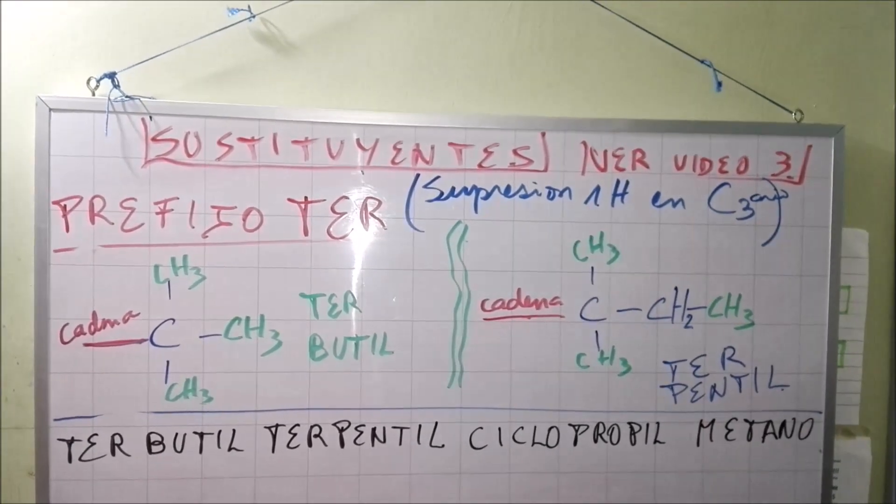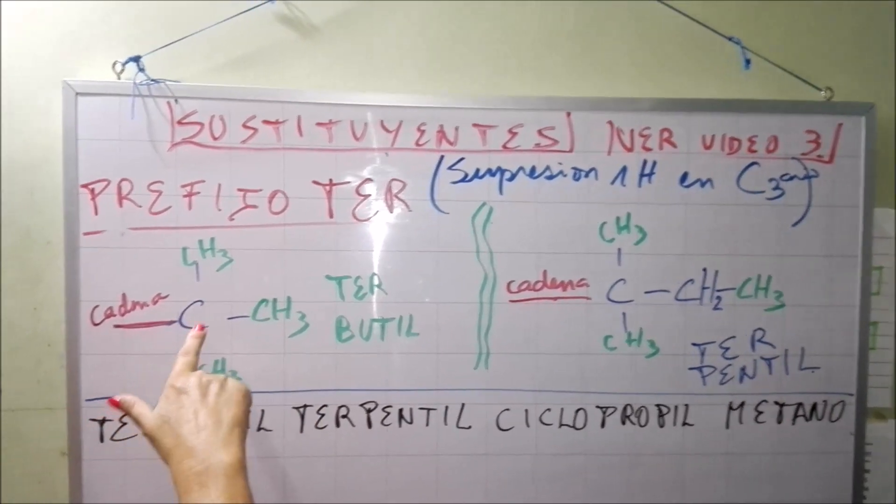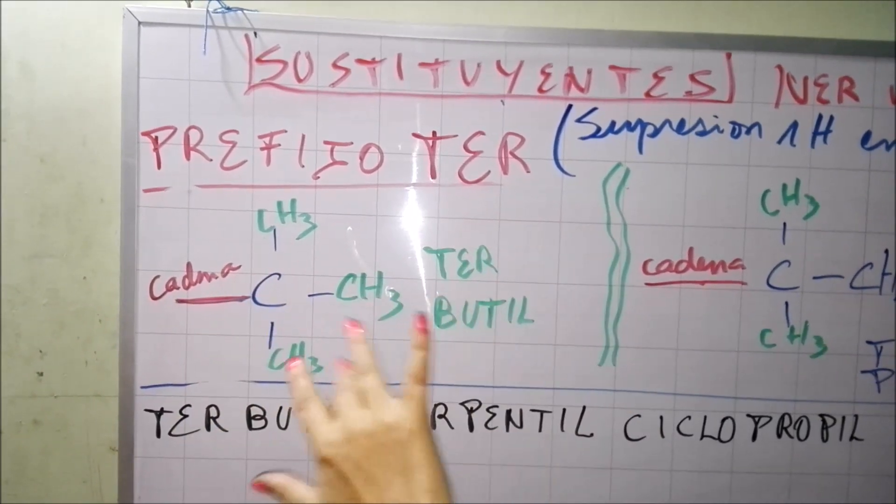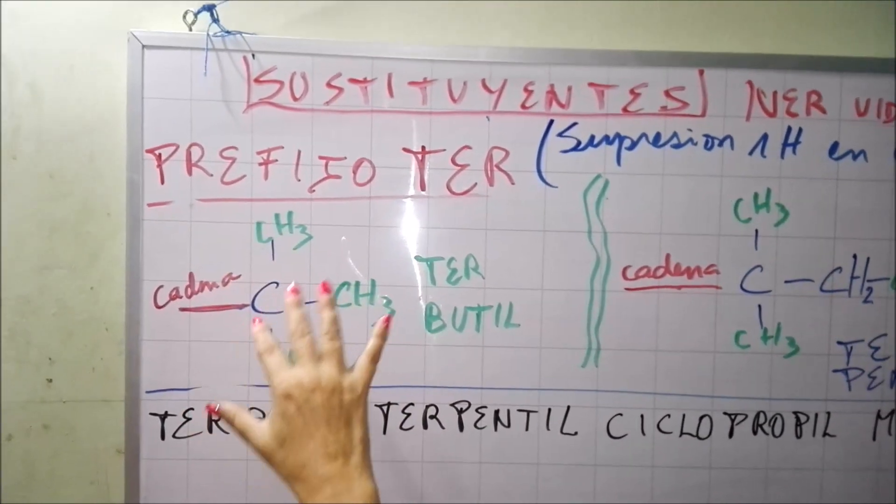simplemente se origina a partir de la supresión de un hidrógeno en carbono terciario. Acuérdense que el carbono terciario es aquel que se encuentra extremo en una cadena.